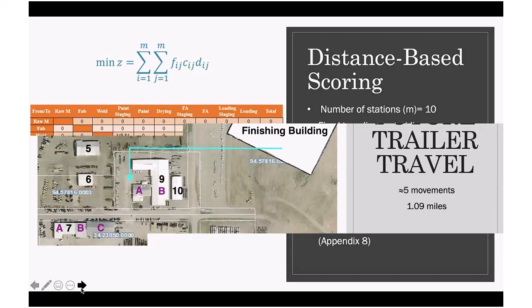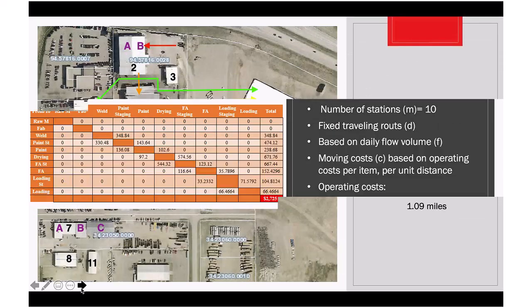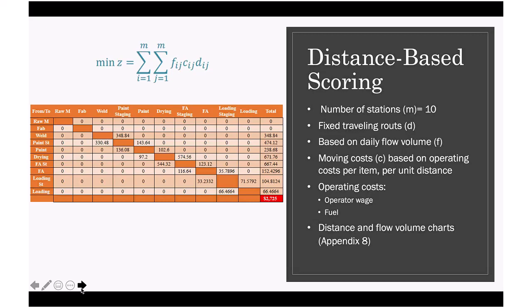Based on these two charts and different moving costs per item per unit distance, we found that the existing flow will cost around $2,725. The equation in this slide is simply multiplying the distance between any two stations, like the drying station and final assembly staging area, by the moving costs between them presented as C, by the flow volume of equipment between them presented as F. Operating costs include equipment between departments such as electric forklifts, driver wages, and tractor fuel.